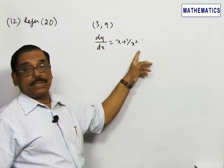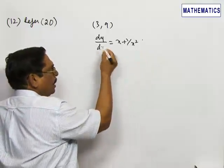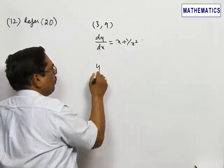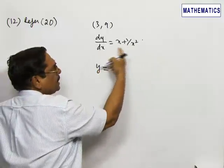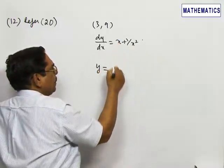Integrating this differential equation with respect to x, we get y = x²/2 - 1/x + c, where c is some constant.